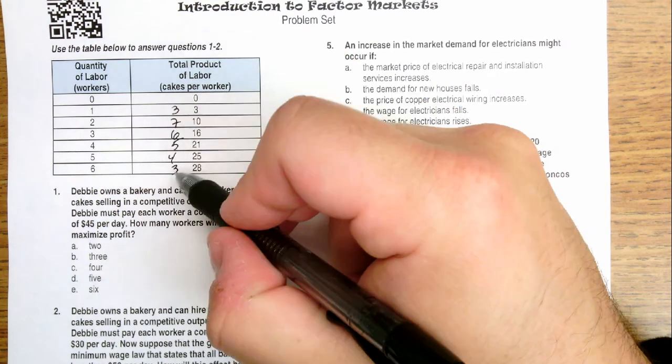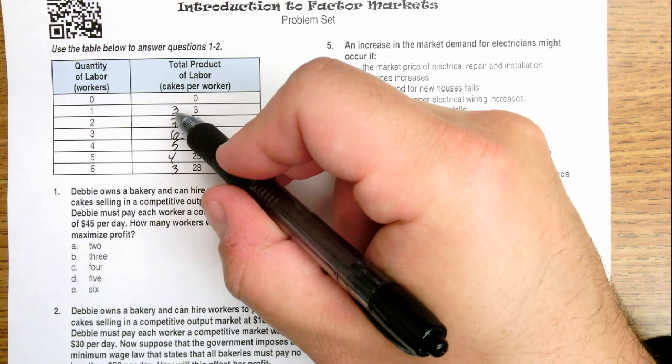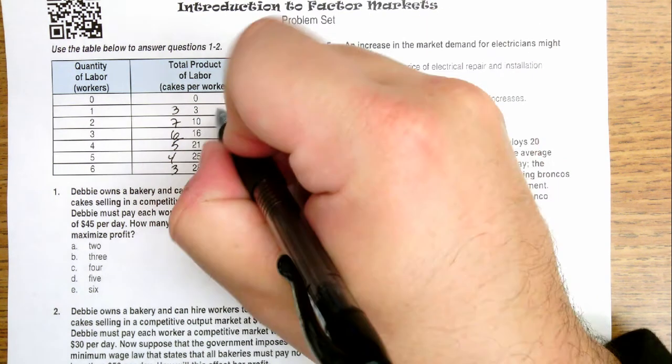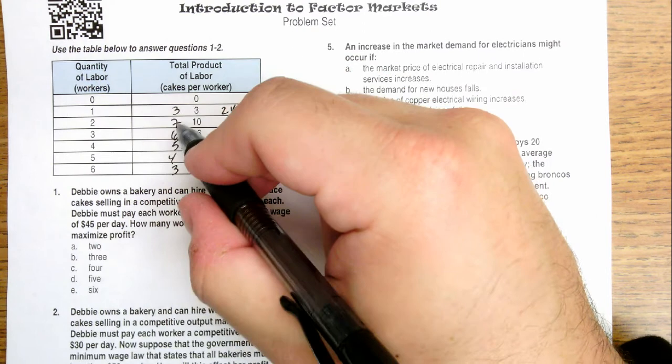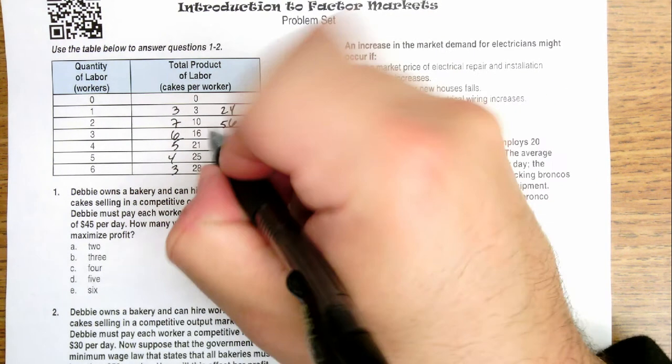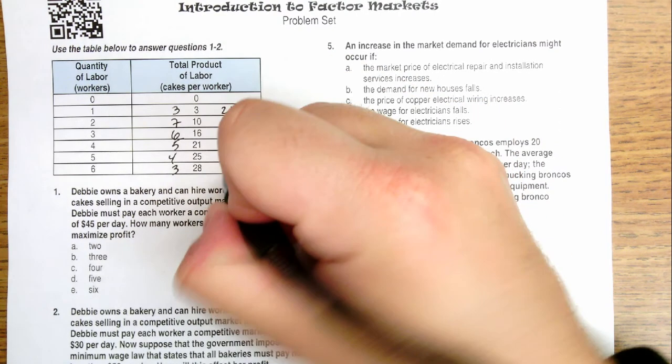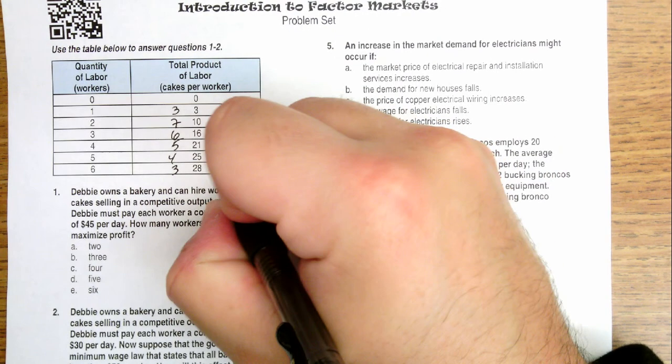So this is how much they're producing, so we take how much they produce and multiply it by the price to see the value that they're creating for the company. So the first worker is adding $24, the second worker is adding $56, the sixth is adding $48, the fifth is adding $40, the fourth is adding $32, and the third is adding $24.